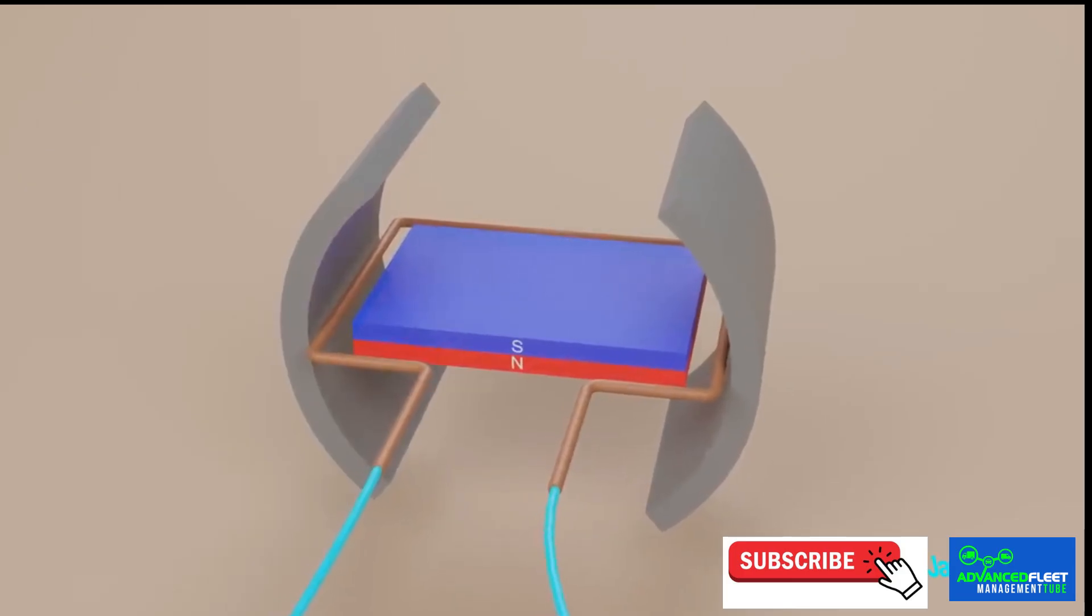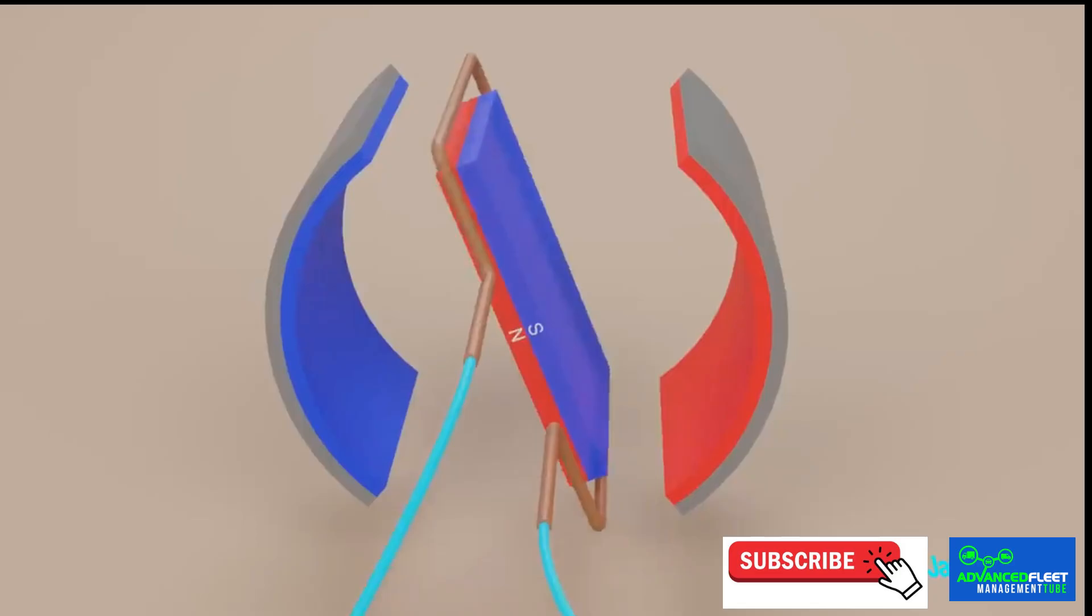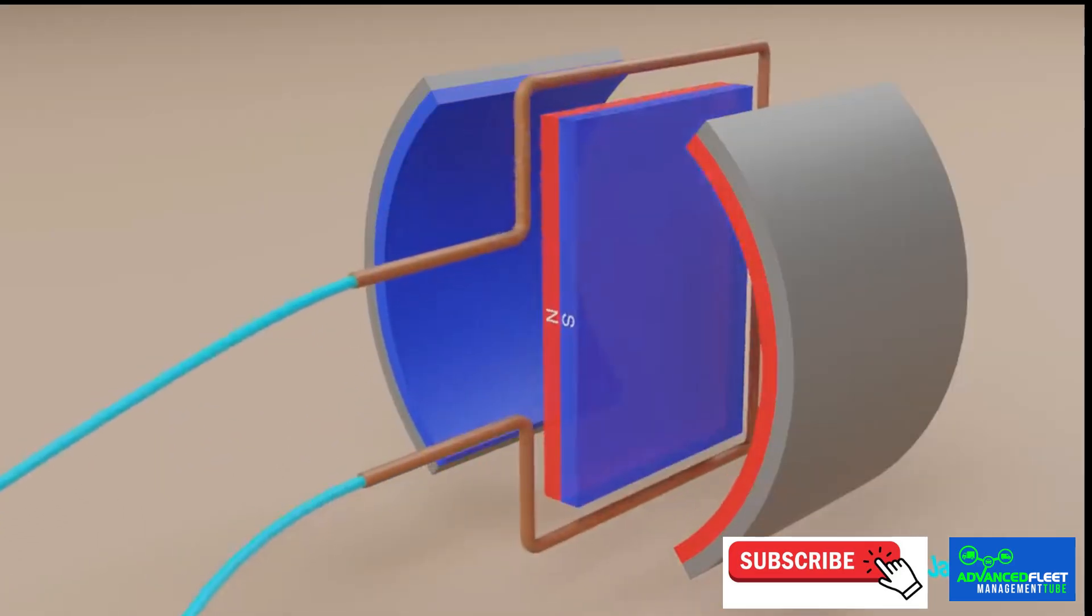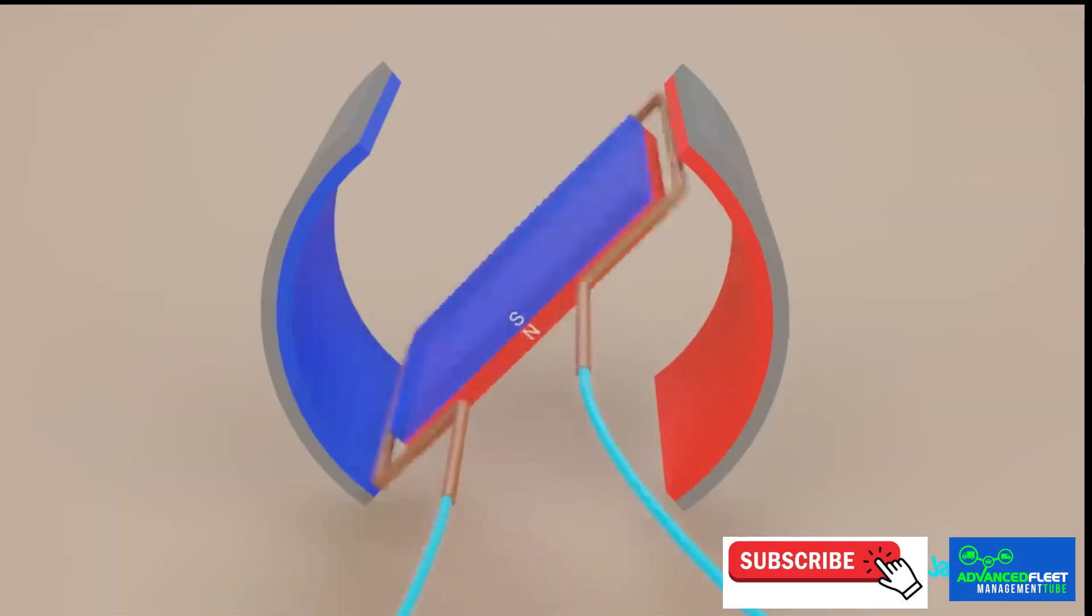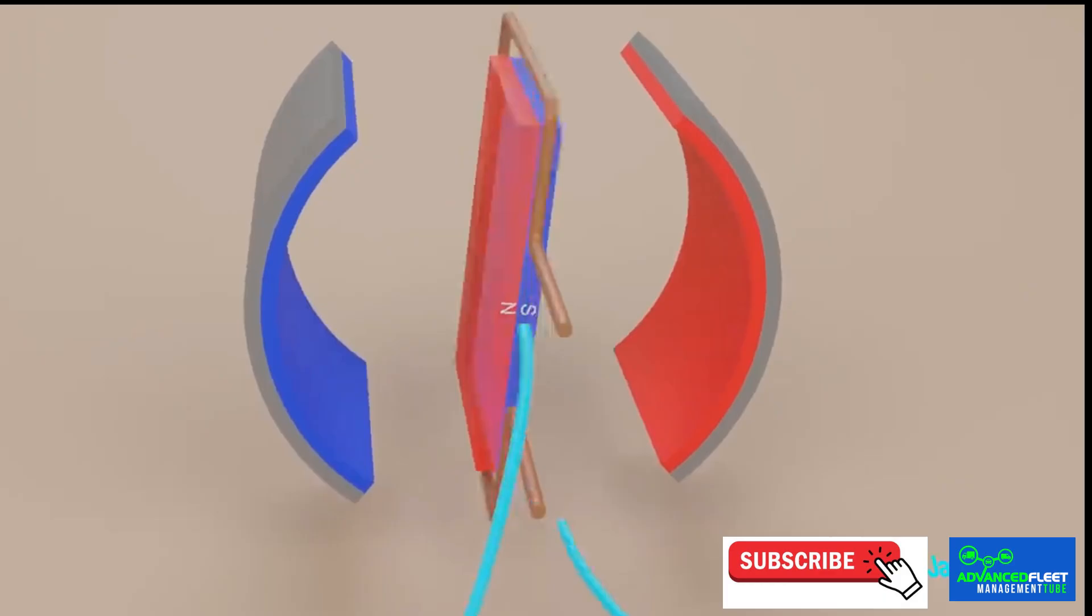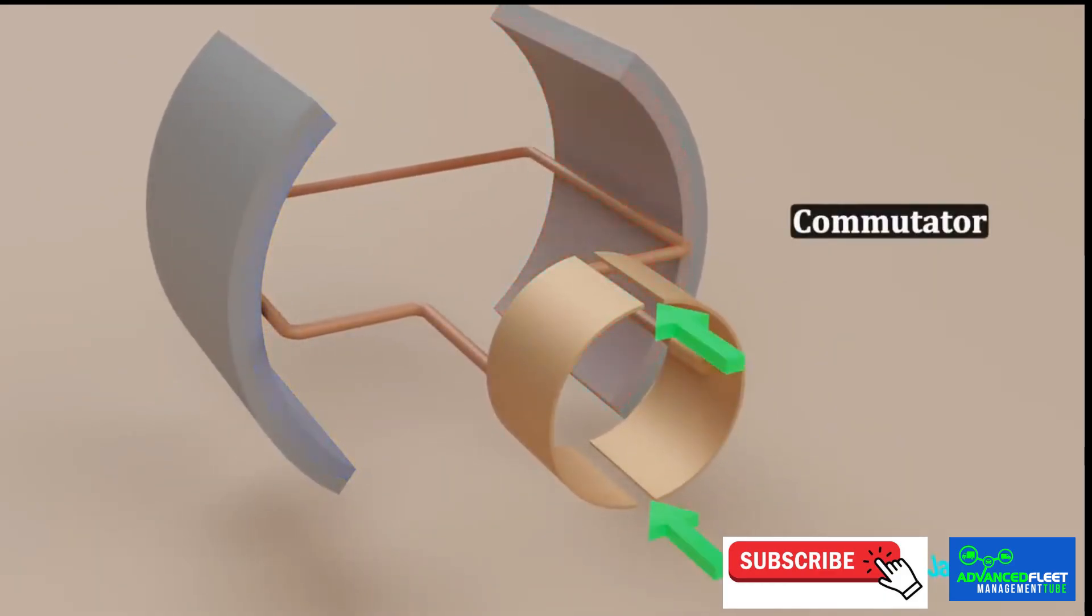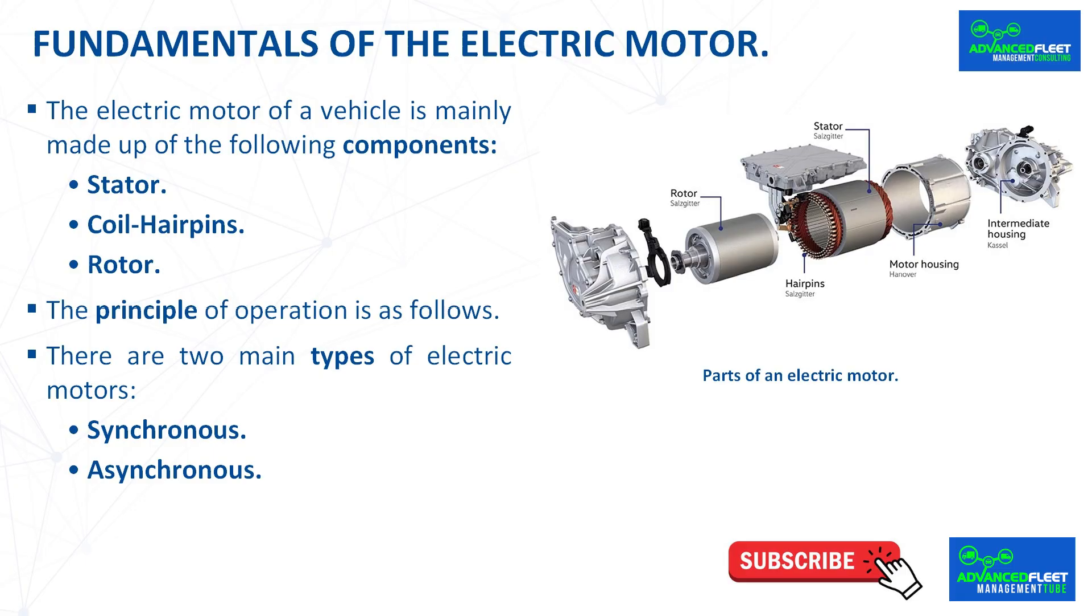Asynchronous: the rotor does not rotate at the same speed as the magnetic field of the stator. They are not synchronized. The advantages of the asynchronous motor are its high efficiency and the ability to generate constant torque. It also has a low cost, high reliability and absence of vibrations. Among its disadvantages, we can find a low power density, a possible risk of overload or low starting torque.